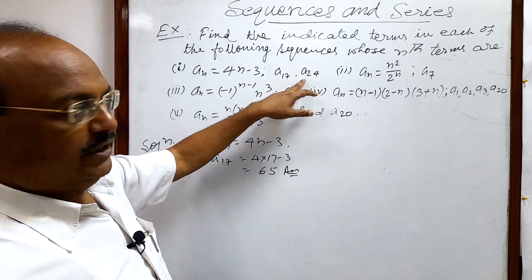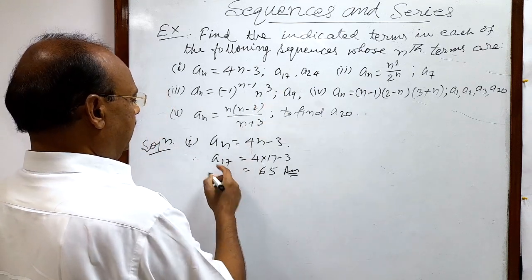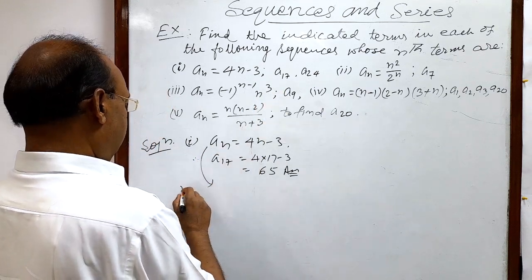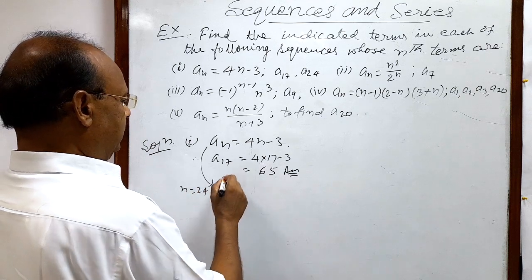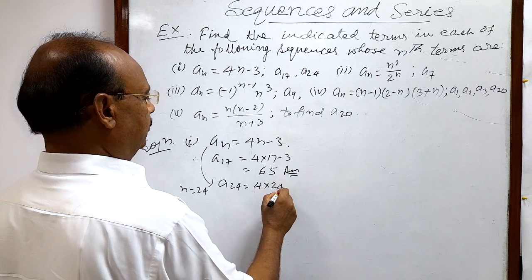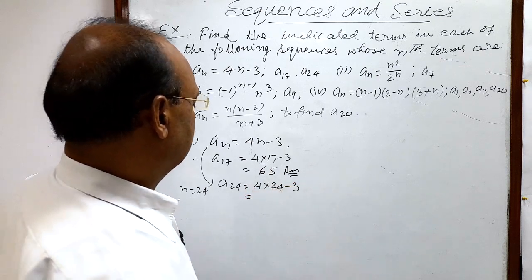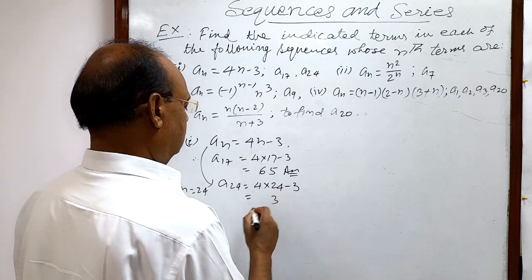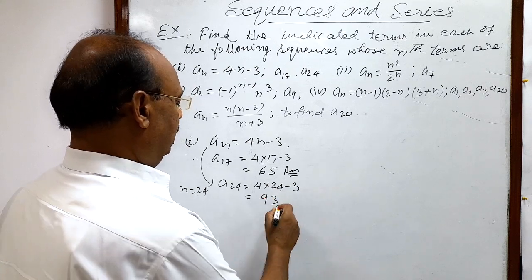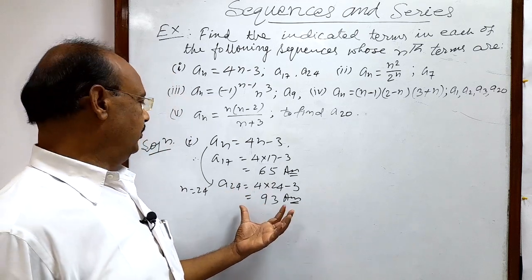Similarly, now we will get a24. So a24 here we will put in place of n is equal to 24. So a24 is equal to 4 into 24 minus 3, and this is equal to 93. This is the answer, the value of a24.